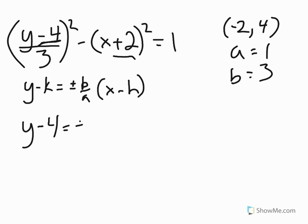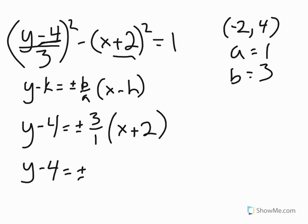Times x minus negative 2. And when I subtract a negative 2, that can just become plus 2. And then I could simplify this real quick into y minus 4 equals plus or minus 3 times x plus 2. And again, you could leave it as this as an answer.